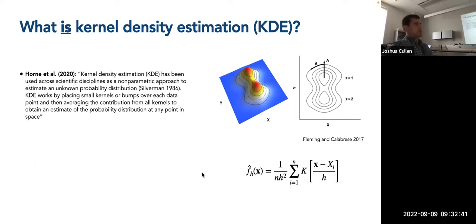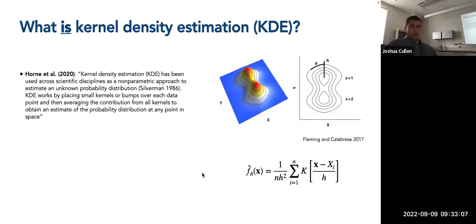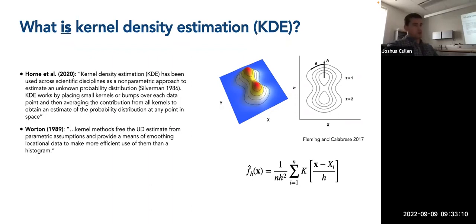Kernel density estimation is used for all kinds of other purposes, often in only one dimension. If you've ever created a density plot — like what we did yesterday for different movement variables such as step length, turning angle, and displacements — those are also technically using kernel density estimation, just in one dimension. In this case, we're using it in two dimensions for space use. According to Warden from 1989, this is the initial paper that introduced KDE as a way to estimate space use for animal movement ecology.